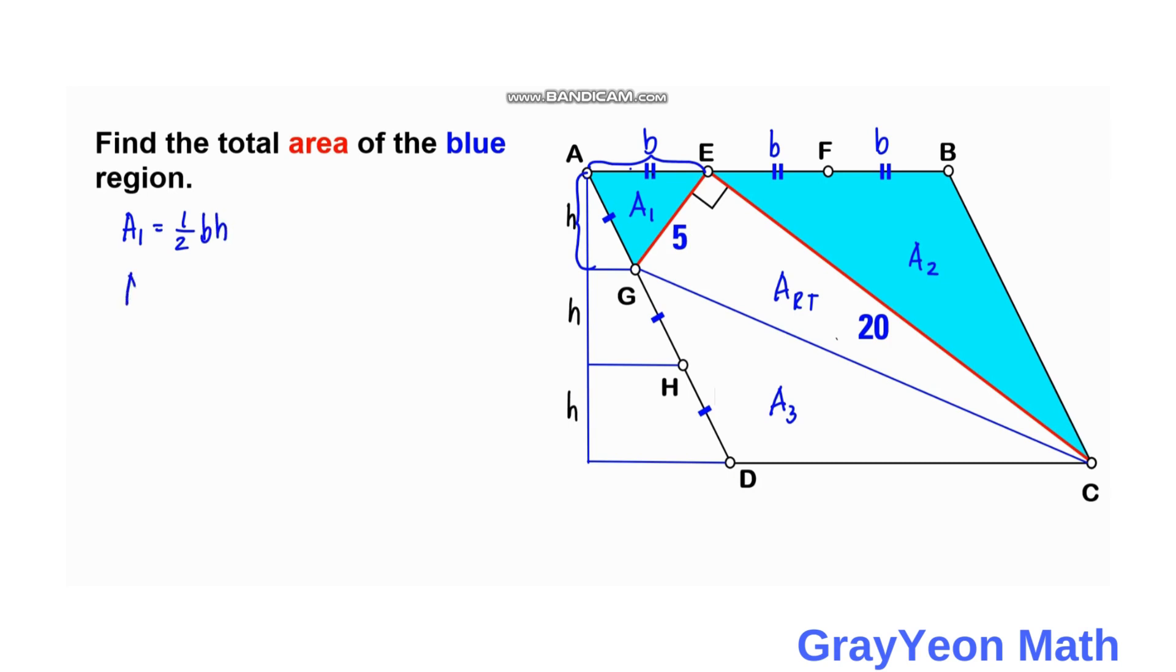And for area 2, this is 2b. And the height is 3h. So the height of the parallelogram is 3h.